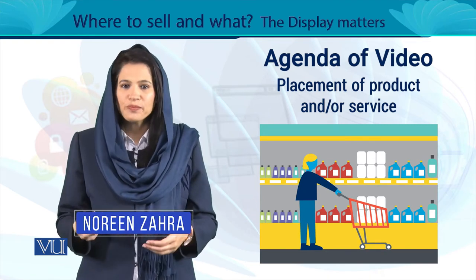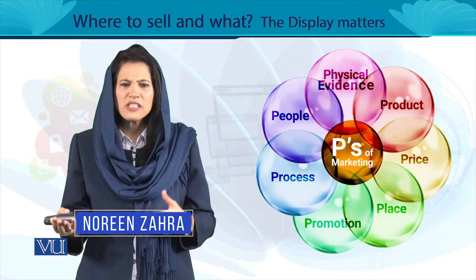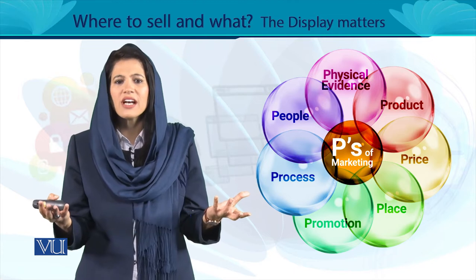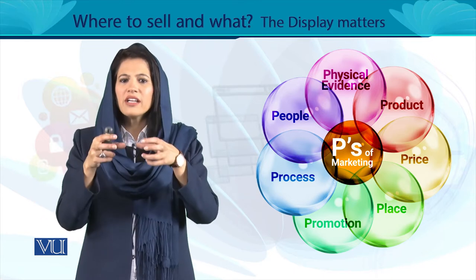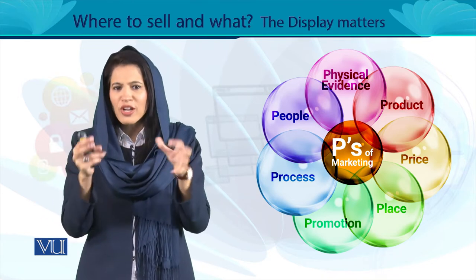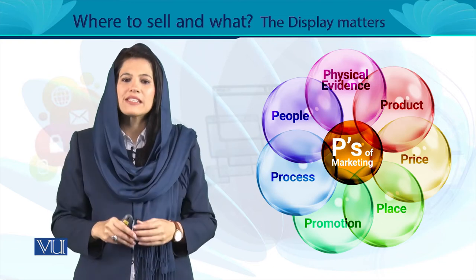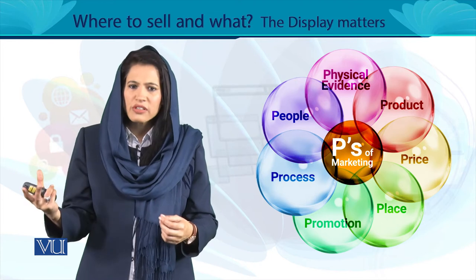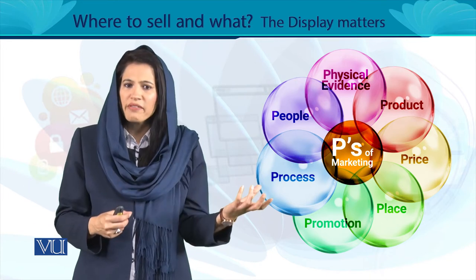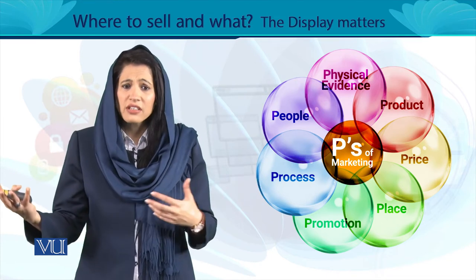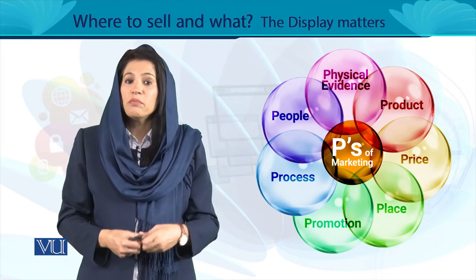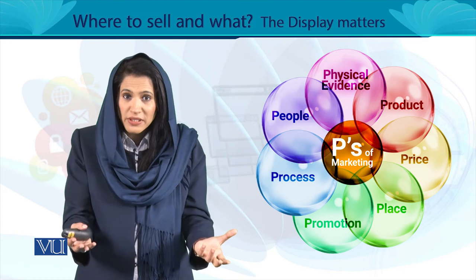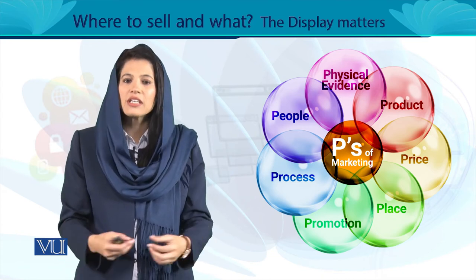अगर आपको याद हो, तो हमने आप से बात की थी 4Ps या 7Ps के बारे में - a kind of framework जो कि مختلف researchers ने दिया है। इस framework में आप अपनी सारी marketing efforts को रखके देख सकते हैं। इसमें हमने कहा था कि आप product define करते हैं, उसकी specifications, value proposition, और product functions define करते हैं। Likewise, आप अपनी product को promote कैसे करेंगे, लोगों को कैसे पता चलेगा कि आपकी product market में available है और उनको खरीदना चाहिए।